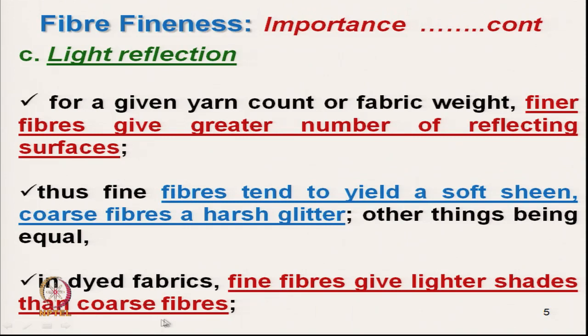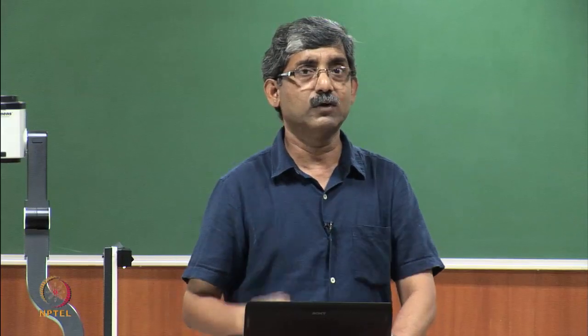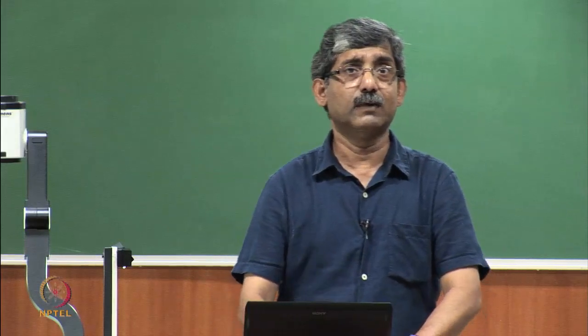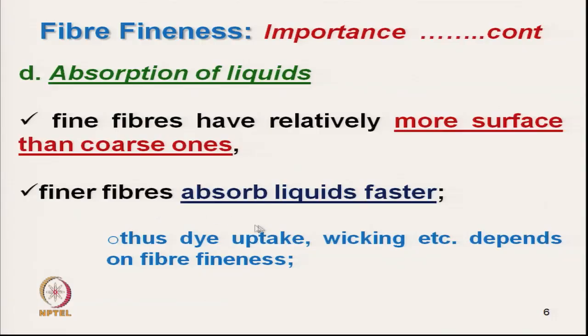In dyeing, finer fibre gives lighter shade than coarser fibre because dye uptake is higher in coarser fibre. Depending on the required depth of shade, we may select finer or coarser fibre accordingly. Finer fibres have relatively more surface area per unit mass than coarser fibres, so finer fibre absorbs more liquid in greater quantity and faster.